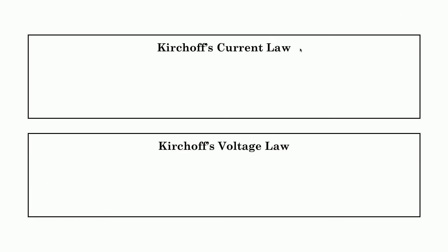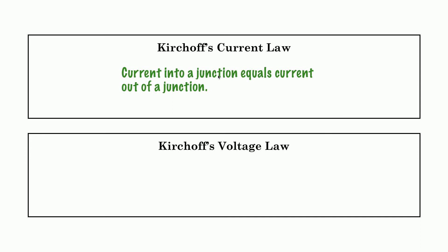Kirchhoff's Current Law states that current into a junction equals current out of a junction. Any current that flows into one part of a circuit has to equal the current coming out — this is like the conservation of current. You can't create electrons; they can't appear out of nowhere and they can't vanish into nothing. The number of electrons that flow in have to equal the current that flows out.